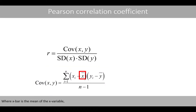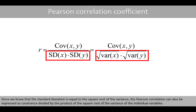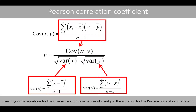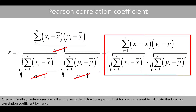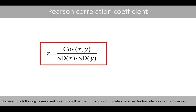Where x-bar is the mean of the x variable and y-bar is the mean of the y variable. Since the standard deviation is equal to the square root of the variance, the Pearson correlation can also be expressed as the covariance divided by the product of the square root of the variance of the individual variables. Plugging in the equations for the covariance and variances gives a combined equation, and after eliminating n-1, we arrive at the commonly used formula to calculate the Pearson correlation coefficient by hand.